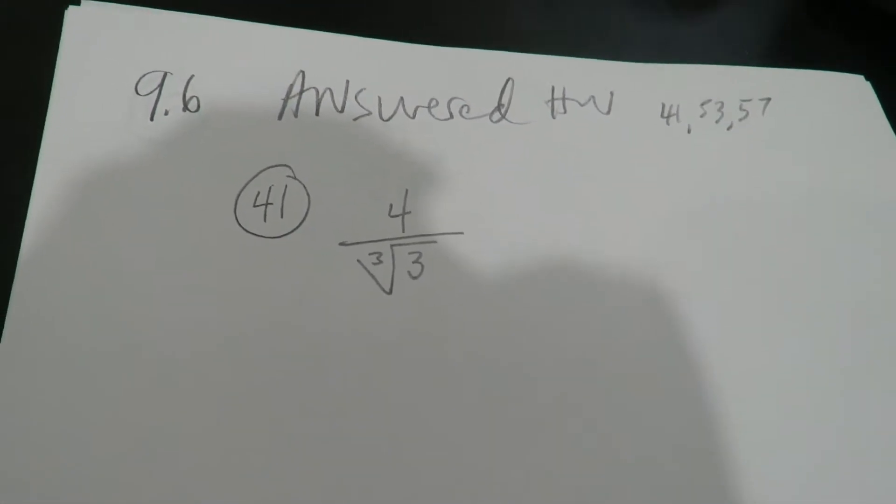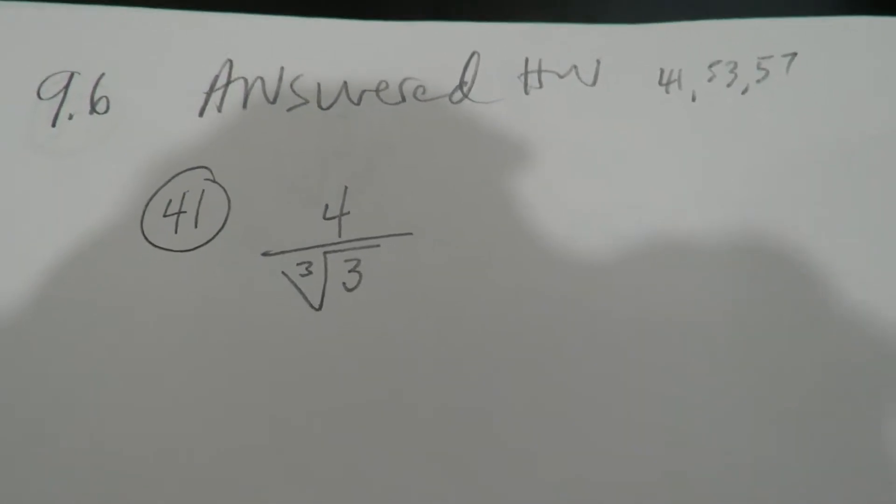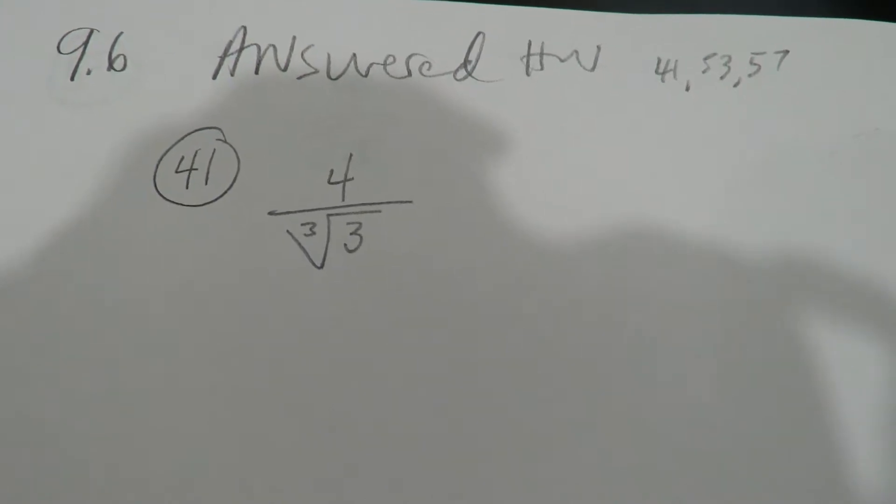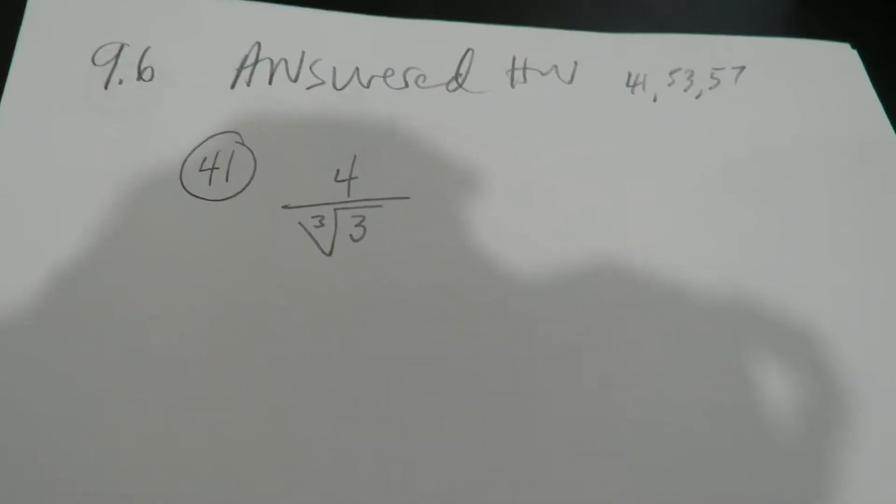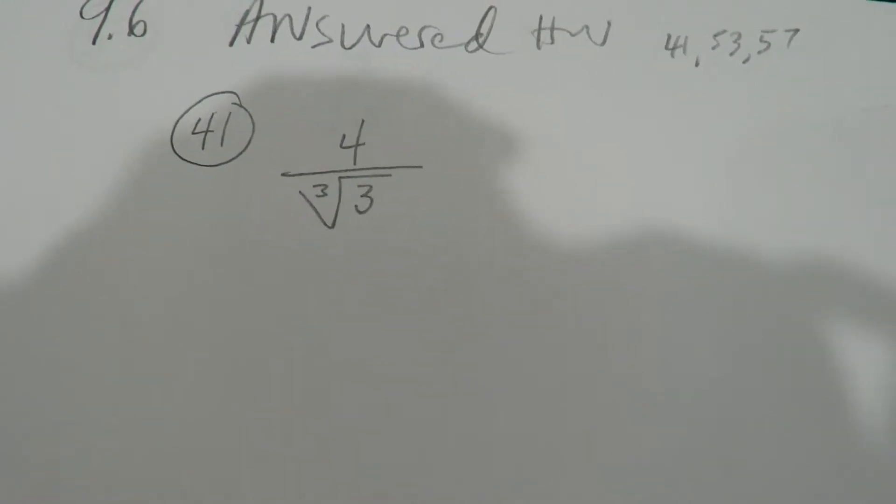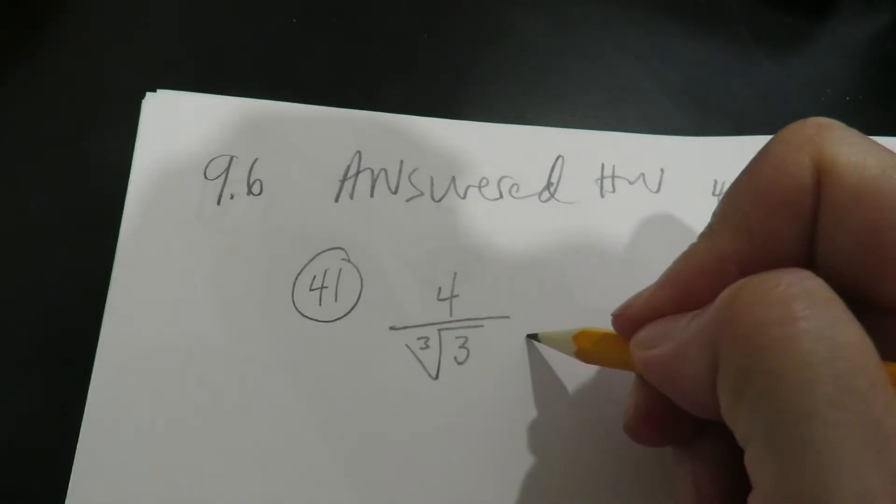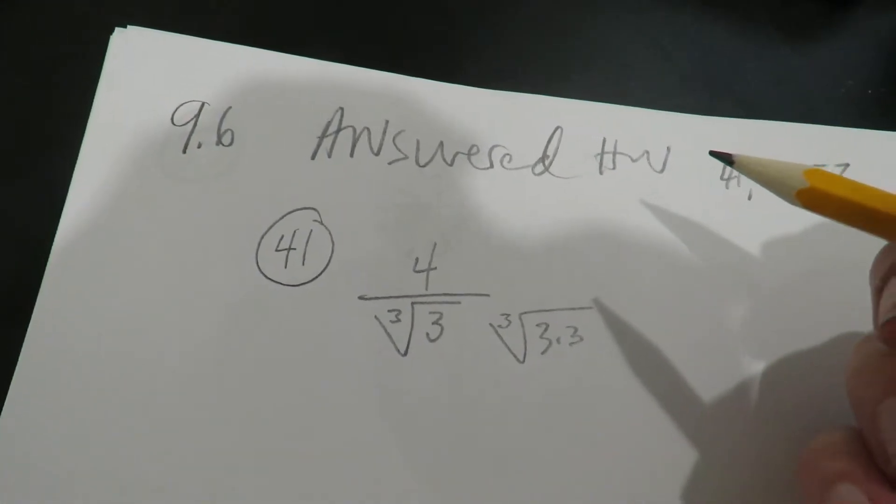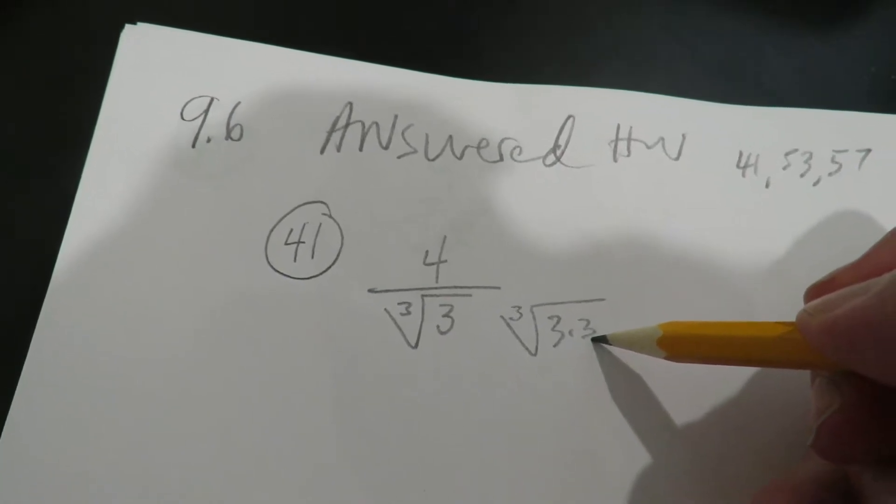9.6 number 41. You cannot, in general the rule is, you cannot leave a radical in the denominator. And if it doesn't nicely and in a friendly way simplify out, then you actually have to force it out. So I cannot take the cube root of 3. It's not a perfect cube. Because what makes a perfect cube is that you have triplets of something. So for instance, this one would need three threes and it only has one. So it needs two more because 3 times 3 times 3 is 27 and I can take the cube root of that.